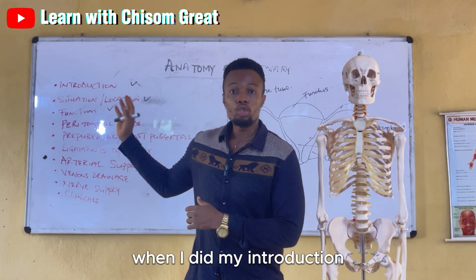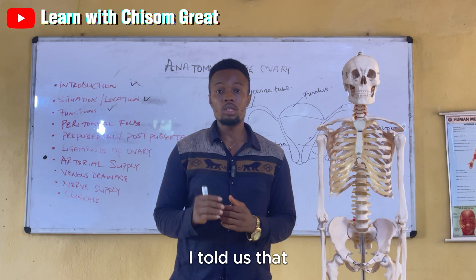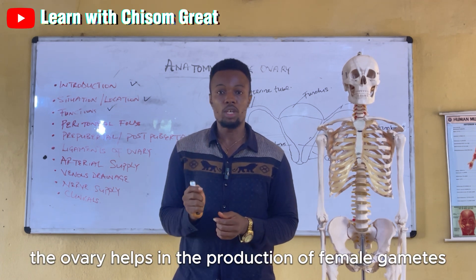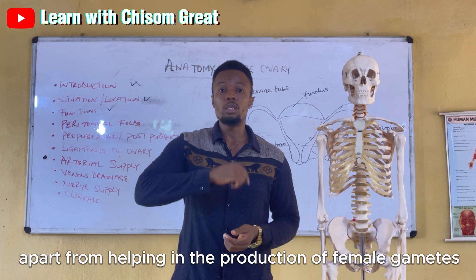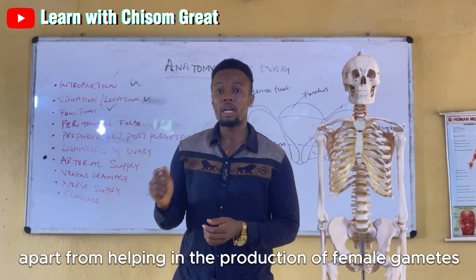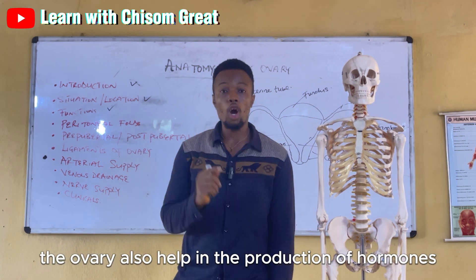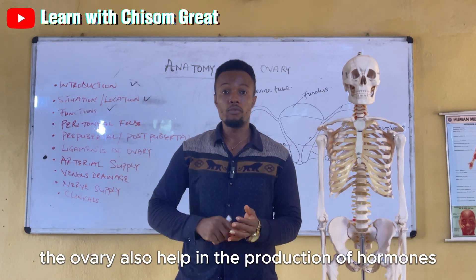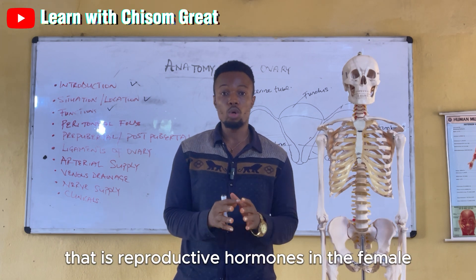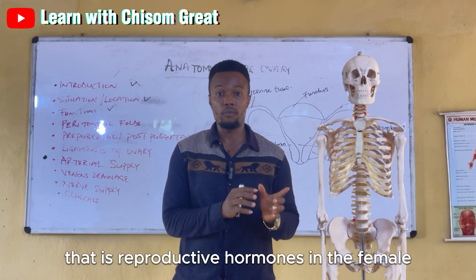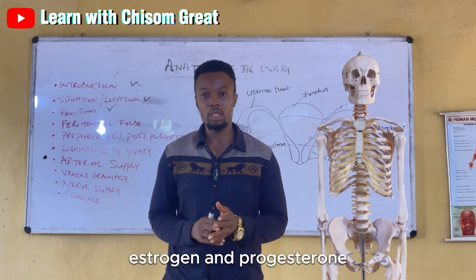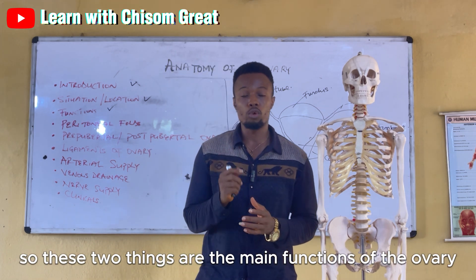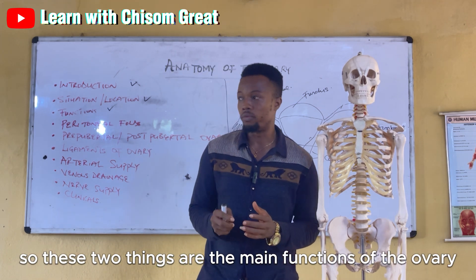The ovary helps in the production of the female gametes. Apart from that, the ovary also helps in the production of reproductive hormones in the female — estrogen and progesterone. So these two things are the main functions of the ovary.